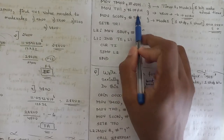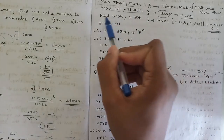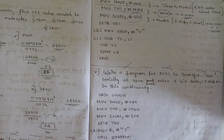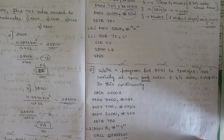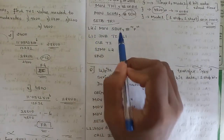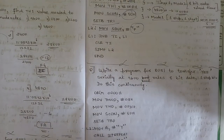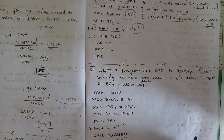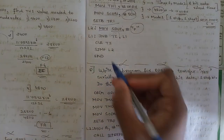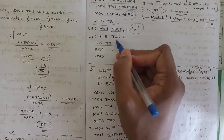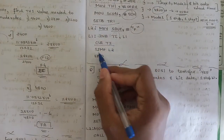For baud rate 4800, the TH1 value is calculated accordingly. The code: ORG, MOV TMOD, MOV TH1, MOV SCON, #50H — SCON is always 50H for mode 1 (one start bit, one stop bit). SETB TR1, then MOV SBUF, #'P' to transfer letter P. Then L1: JNB TI, L1 — wait for transmit interrupt flag. Once set, CLR TI and SJMP L2 to repeat continuously.